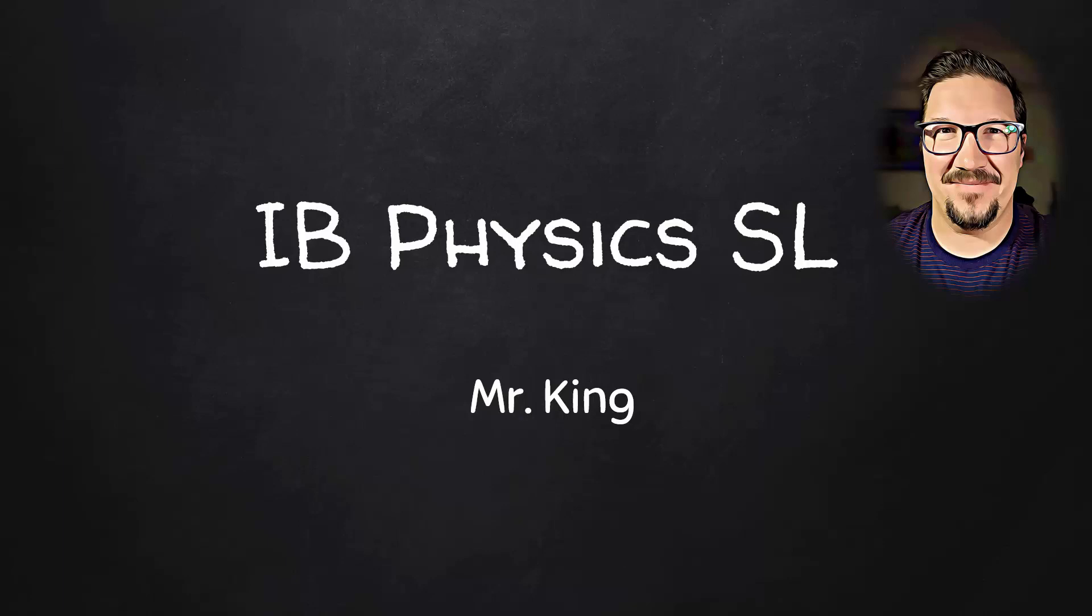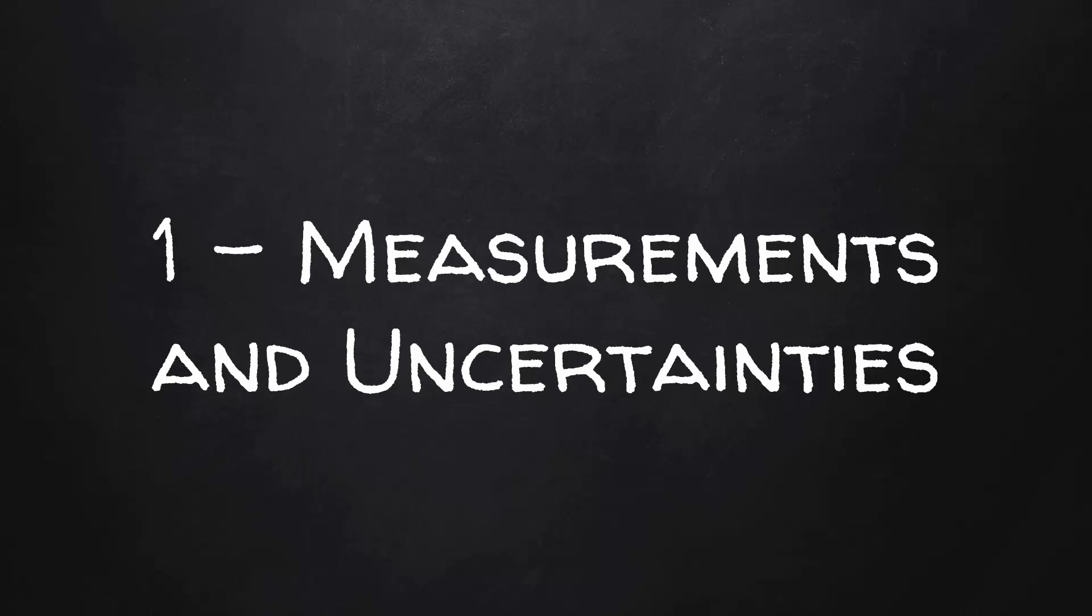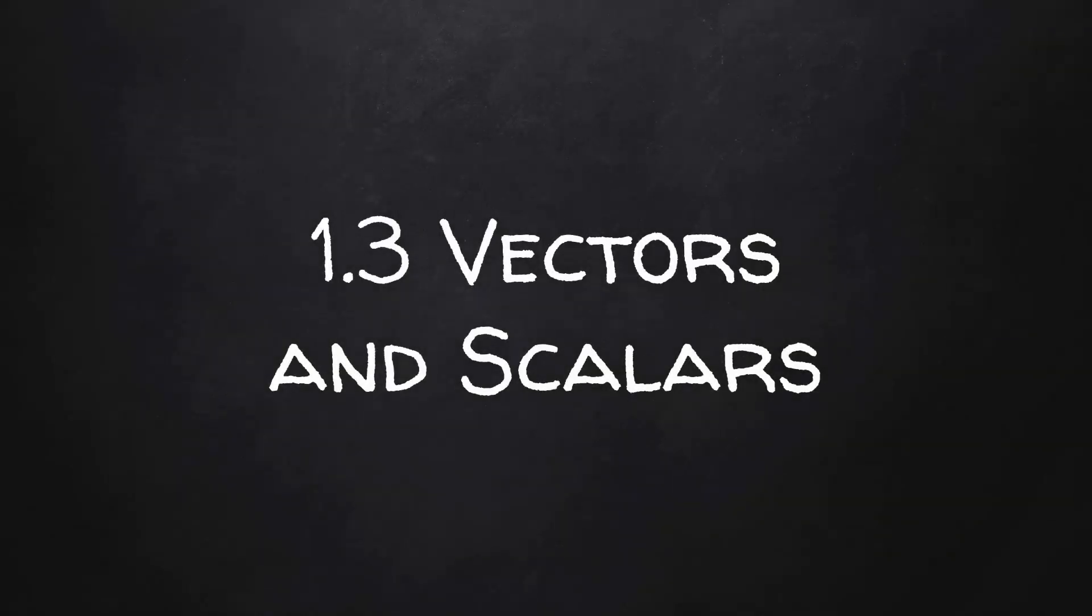This is IB Physics SL. I am Mr. King. Topic 1: Measurements and Uncertainties. Section 1.3: Vectors and Scalars.